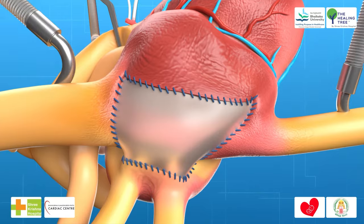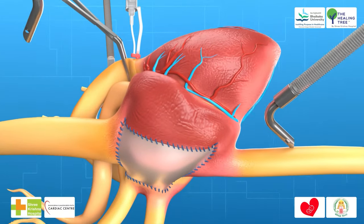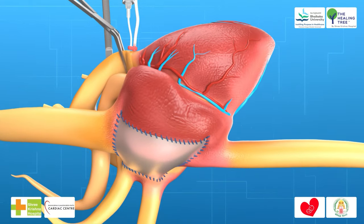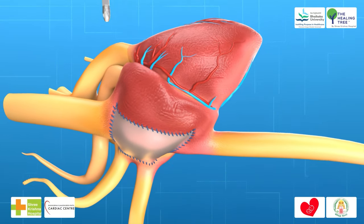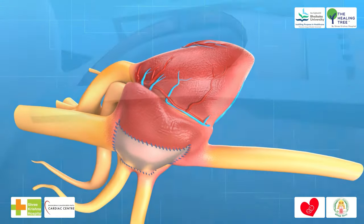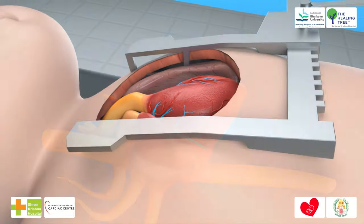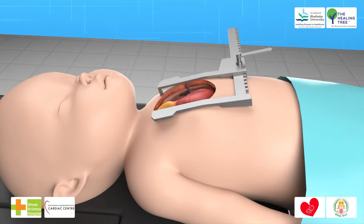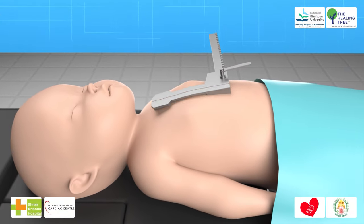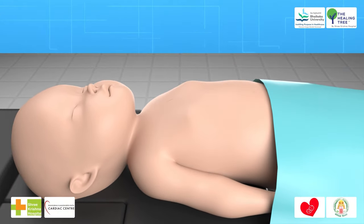Caval snares are now released and rewarming is started. Air is carefully evacuated from the heart via aortic needle vent, which is kept on low suction until ready to discontinue bypass.